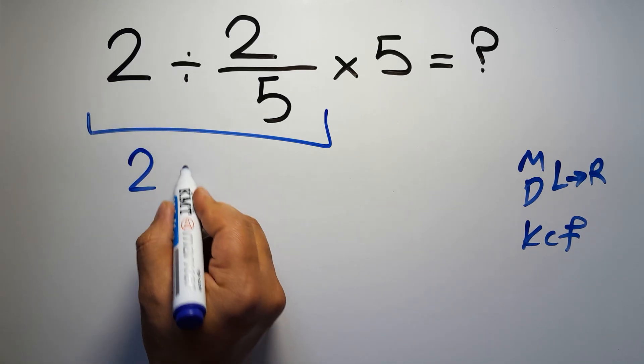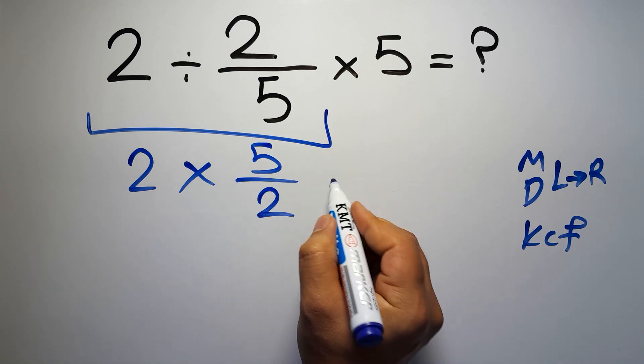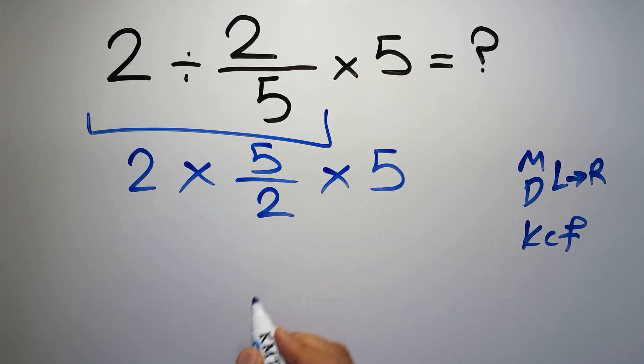change division to multiplication, and flip the second fraction. And here we have times 5. Okay, 2 times 5 over 2, then times 5.